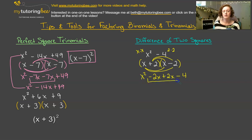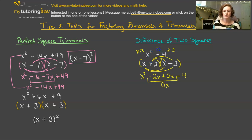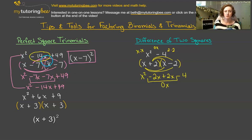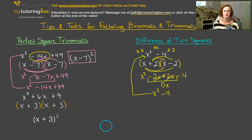Look what happens when we combine our like terms in the middle. If we've got a negative 2x and a positive 2x, they essentially cancel out and leave us with 0x. In our original expression, we don't have that regular x term because it's really a 0x — we just don't write the 0x. These actually cancel out and go away, and we're left with x squared minus 4, which matches our original expression.